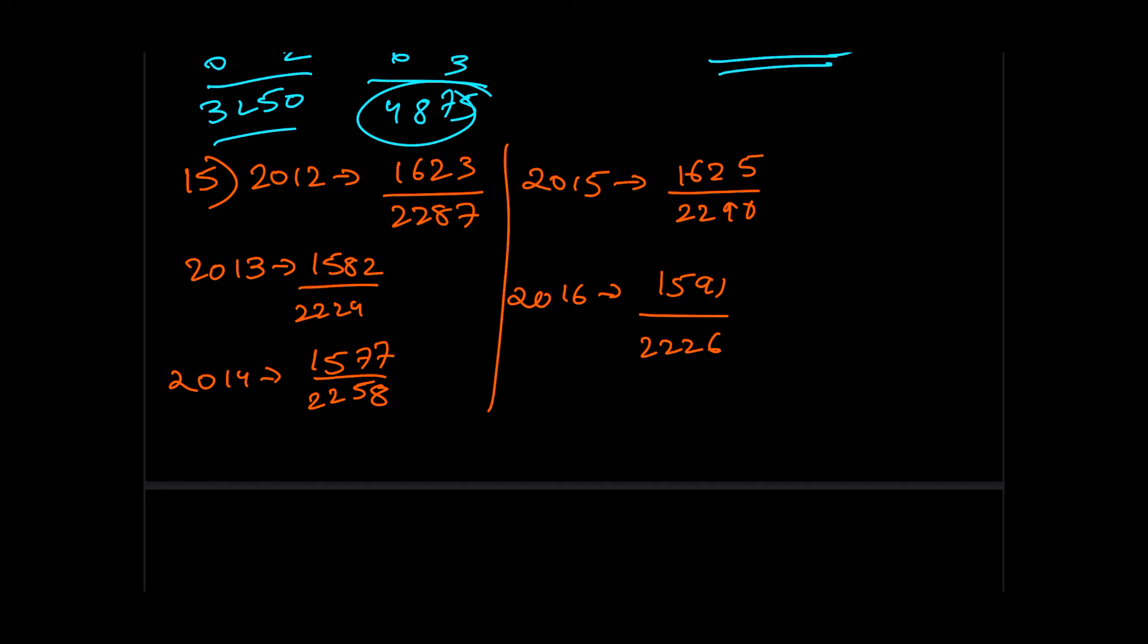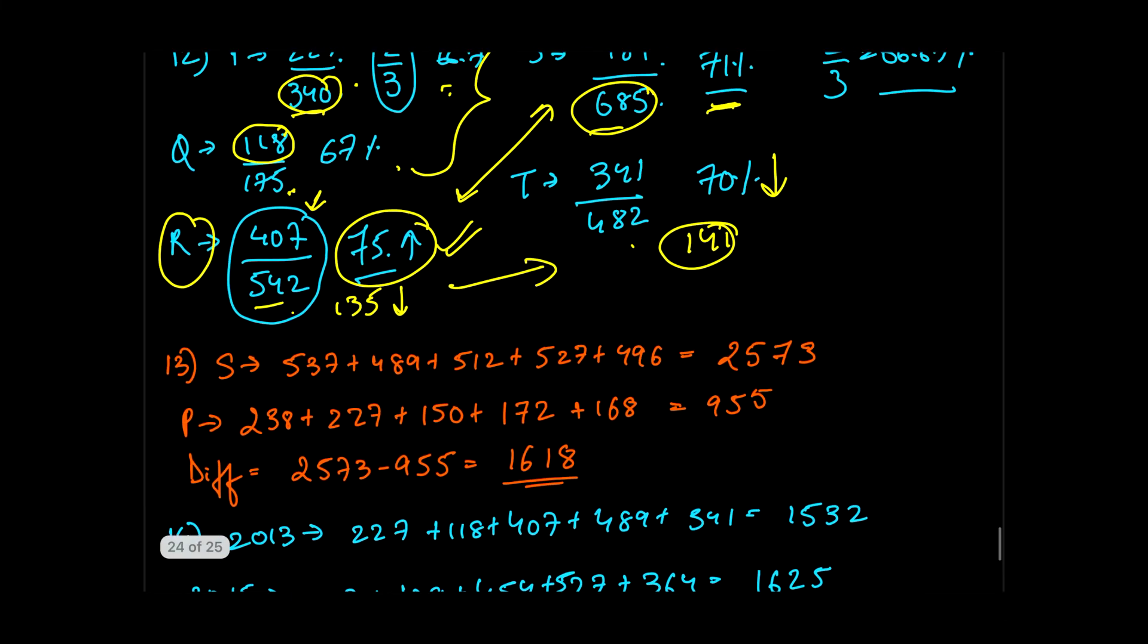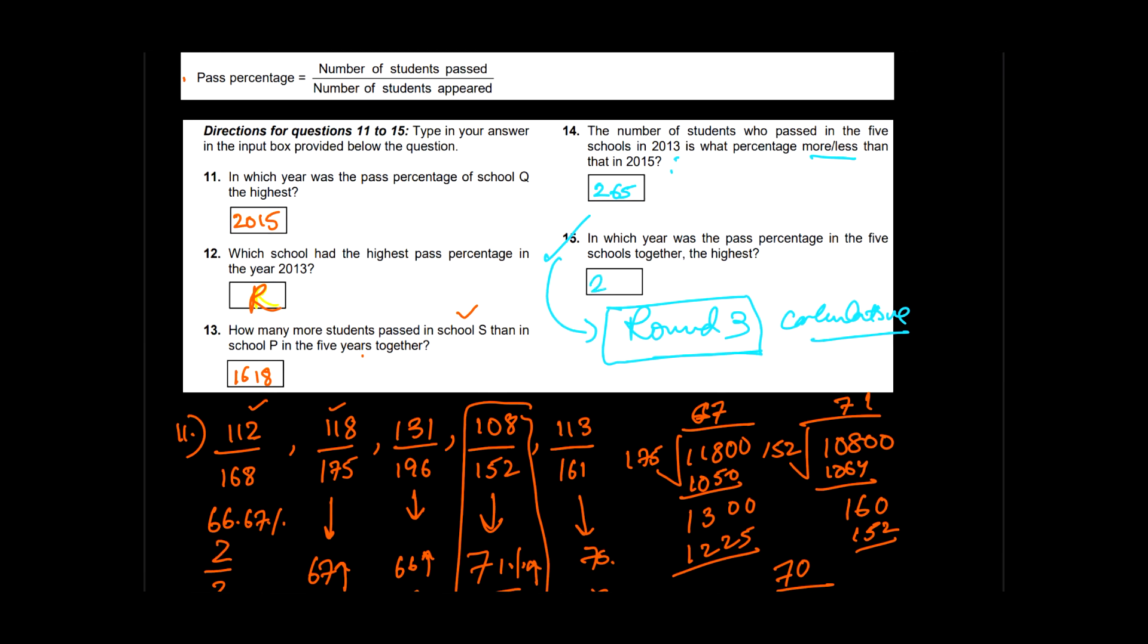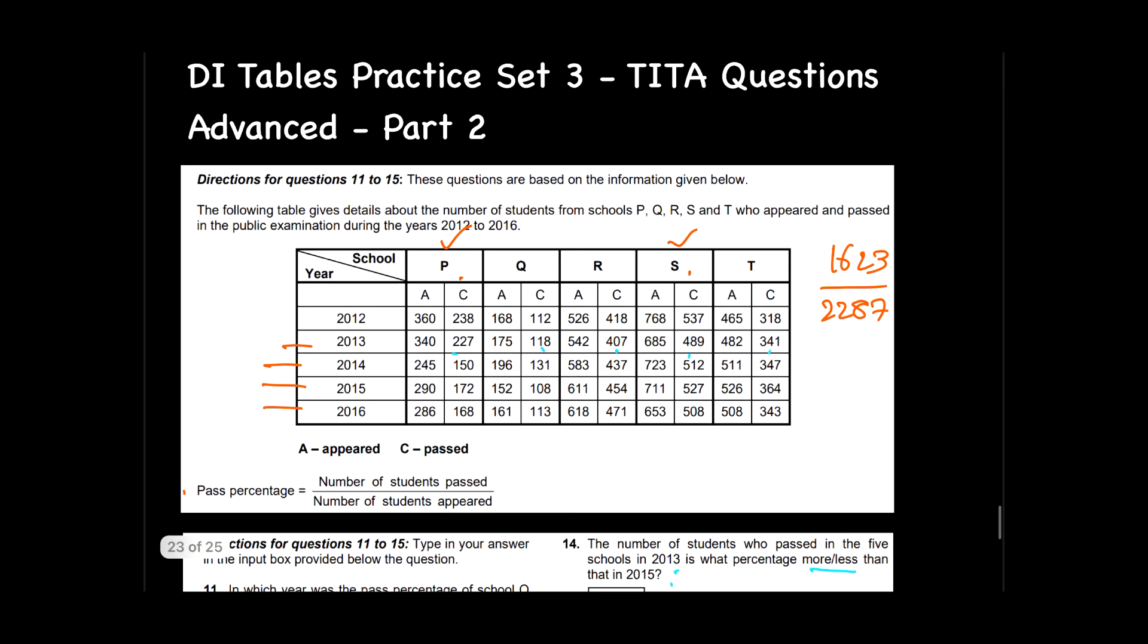If you're still left with five minutes of your sectional time, then you can surely go and try this out. Otherwise, if this is a TITA question, you can take a guess as well. So you can take a guess looking upon the fraction, or else use your calculator to get the answer. If I use my calculator, the fraction 1582 upon 2224 is closest to 71.13, which is the highest value over here. That would be my answer, so I'll take up 2013 as my answer. This was the process of how you're supposed to work with such an advanced set.